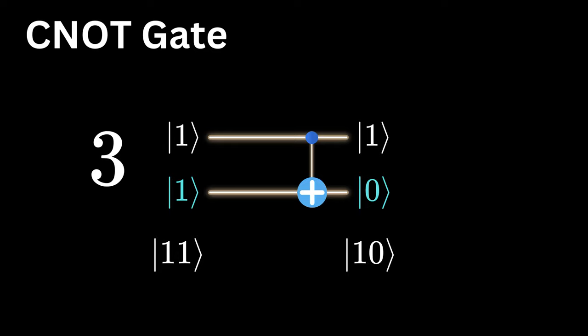We use this as our input for the quantum circuit. And what comes out on the other side? It's 1, 0, another two qubit state. In our everyday decimal system, this translates to the number 2, just like that. We have mapped 3 to 2.